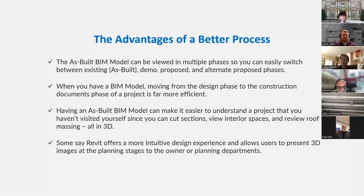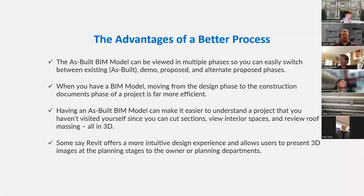There are some advantages to having a BIM as-built that some may not know. A 3D model is not only useful for presentations and design purposes but also as an as-built. The as-built BIM model can be viewed in multiple phases — you can easily switch between existing/as-built, demo, proposed, and alternate proposed phases. When you have a BIM model, moving from design phase to construction documents is far more efficient. Having an as-built BIM model makes it easier to understand a project you haven't visited yourself, since you can cut sections, view interior spaces, and review roof massing all in 3D. Revit offers a more intuitive design experience and allows users to present 3D images at the planning stages to owners and the planning department.